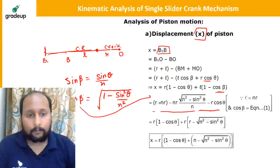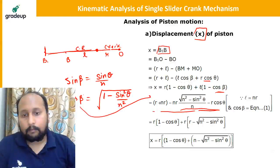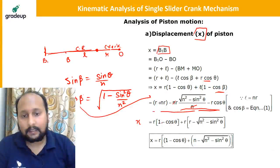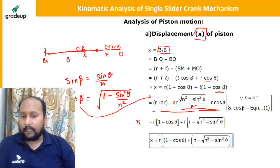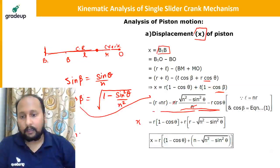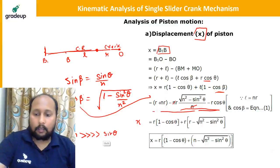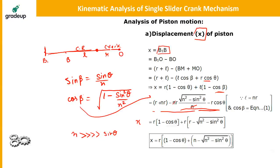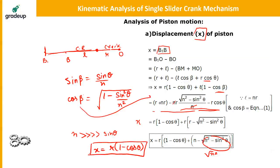Now applying the boundary condition that n is much much greater than sinθ, we can approximate √(n² − sin²θ) ≈ n. Therefore the displacement formula simplifies to: x = r(1 − cosθ). This is the approximate displacement formula for the piston at any angle theta.